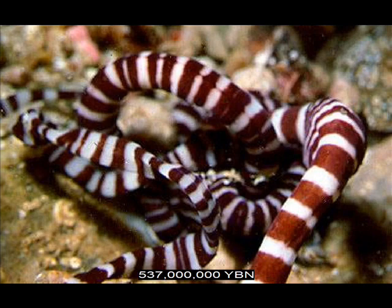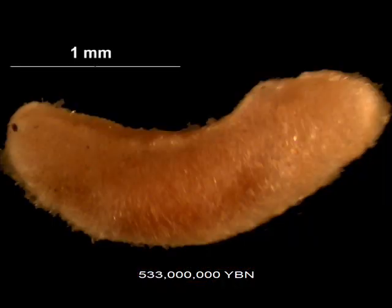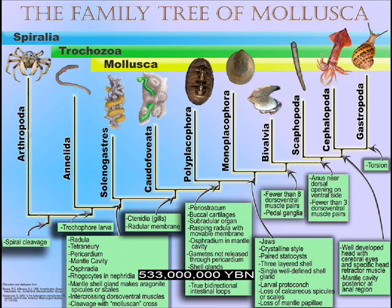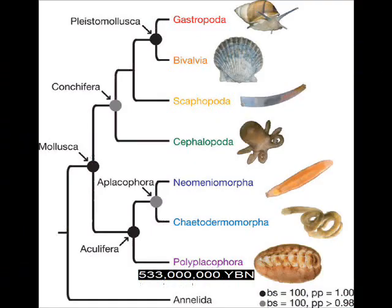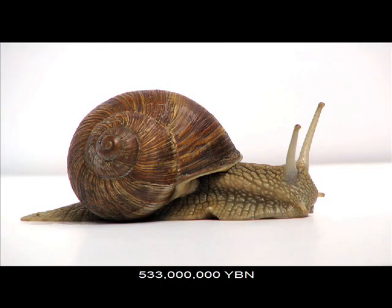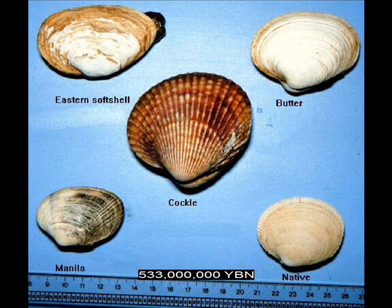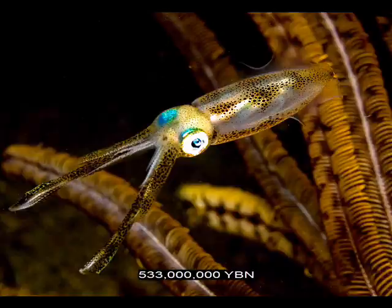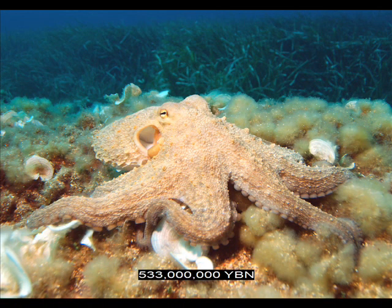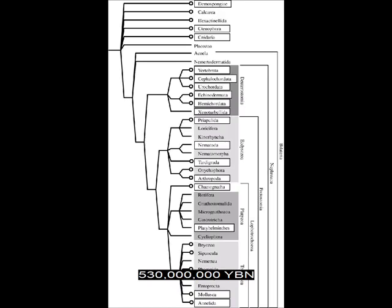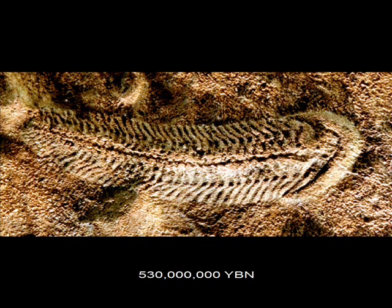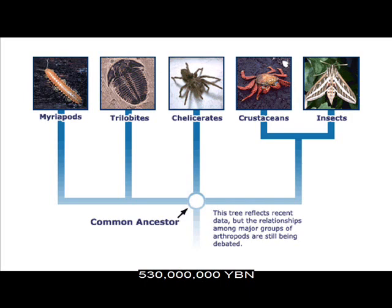Trochozoa nemertia — ribbon worms. Trochozoa mollusks evolve. The phylum Mollusca is the second largest animal phylum after the arthropods and is divided into seven classes, three of which — gastropoda (snails), bivalvia (clams and mussels), and cephalopoda (squids and octopuses) — are of major significance. Ecdysozoa arthropods evolve. Arthropods can be compared to a segmented worm encased in a rigid exoskeleton. The phylum Arthropoda is the largest phylum in the animal kingdom.